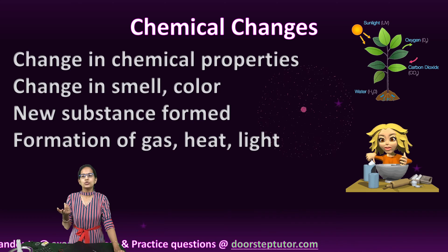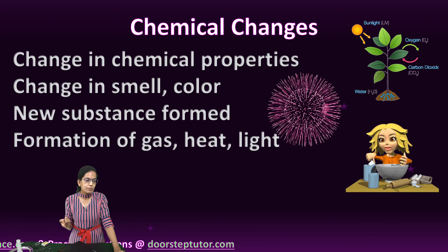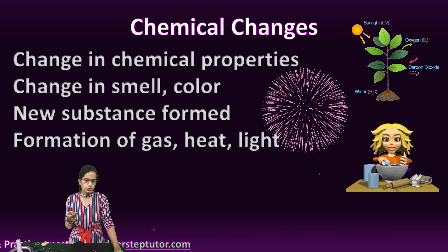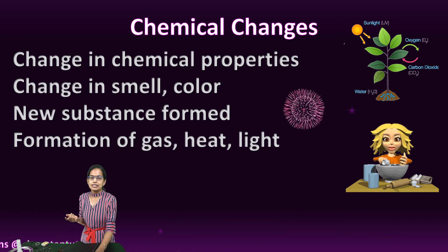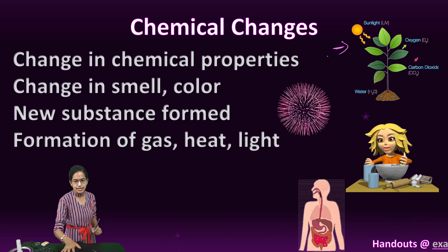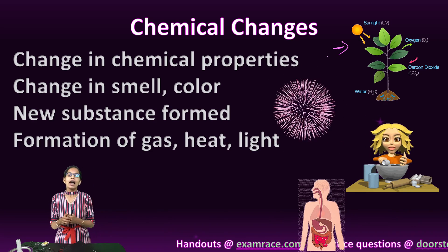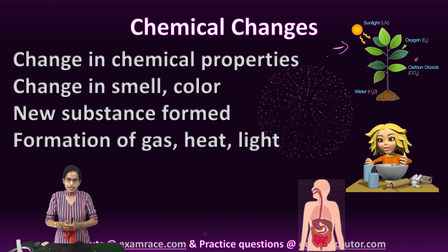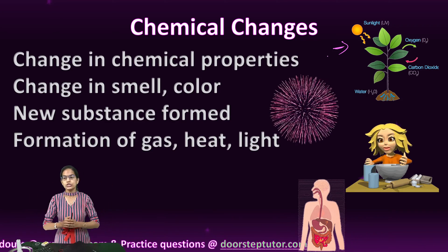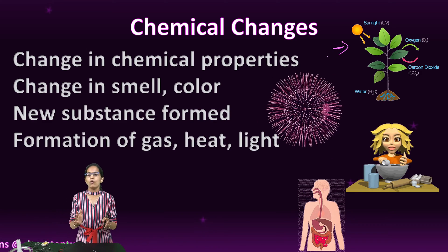A very good example to start with is fireworks. Fireworks have great sounds and this is an example of a chemical change — sound is produced here. The next example is photosynthesis, the process of digestion, the process of respiration, or cooking food and mixing various ingredients. The chemical composition changes, new substances form, and this is an example of a chemical change.